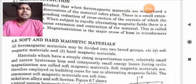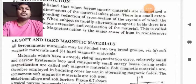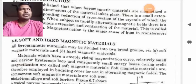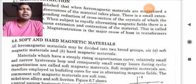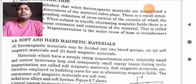Soft magnetic materials are therefore employed in building cores for use of alternating magnetic fields. The commonest soft magnetic materials are soft iron, nickel iron alloys and soft ferrites.